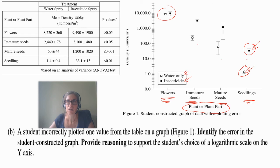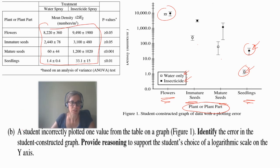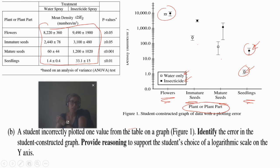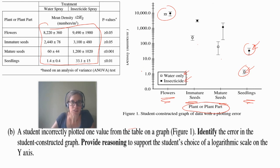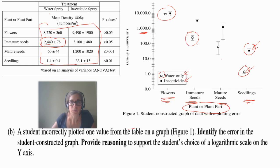So this insecticide must be killing insects or bugs that eat the plants. They didn't want you to graph it all — here's the data table showing the same thing. The first question says a student incorrectly plots one value on the graph — identify the error. The mistake is this: the immature seeds with water should be 2,440, but if you look at the graph, that point is plotted at less than 1,000. That's the point plotted incorrectly.